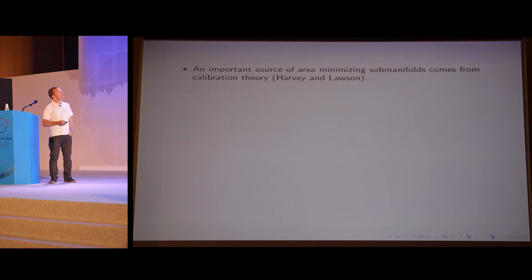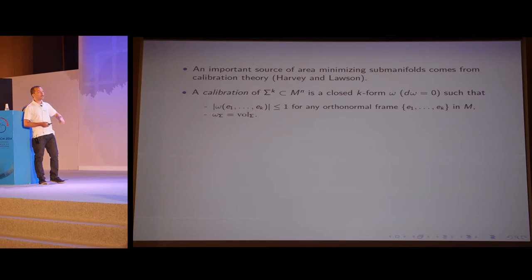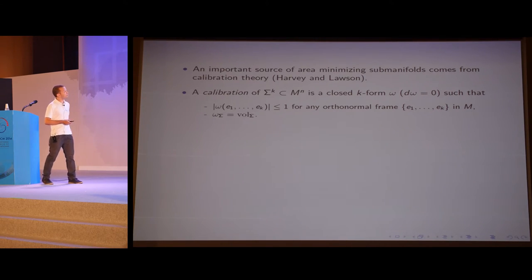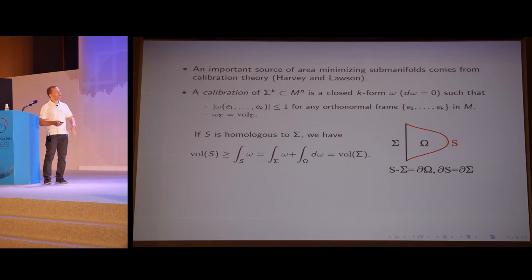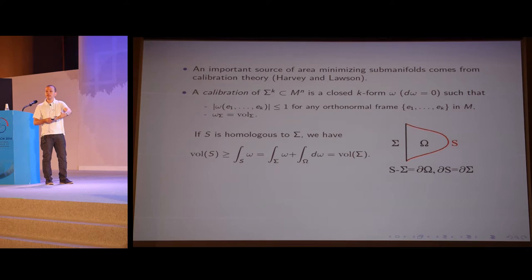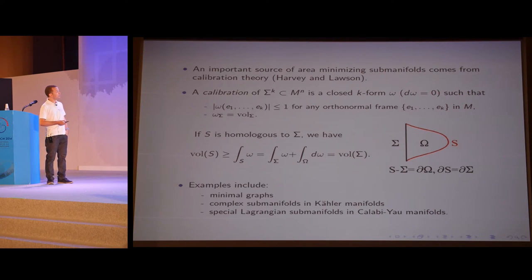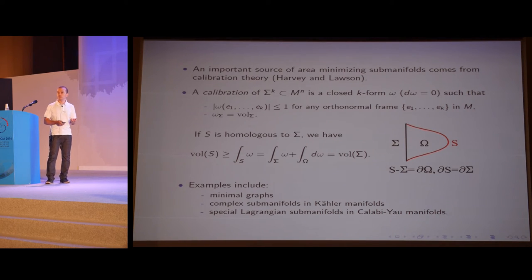An important source of area-minimizing submanifolds comes from the theory of calibrations of Harvey and Lawson, linked to differential forms. A calibration of some k-dimensional submanifold sigma is a closed k-form omega that has the property that it's bounded by one everywhere, but when restricted to the submanifold it's equal to one times the volume form. When such differential forms exist, it follows very easily from Stokes' theorem that every calibrated submanifold is area minimizing. These include important classes like minimal graphs, complex submanifolds, and special Lagrangian submanifolds in Calabi-Yau spaces — they are all calibrated and therefore area minimizing.